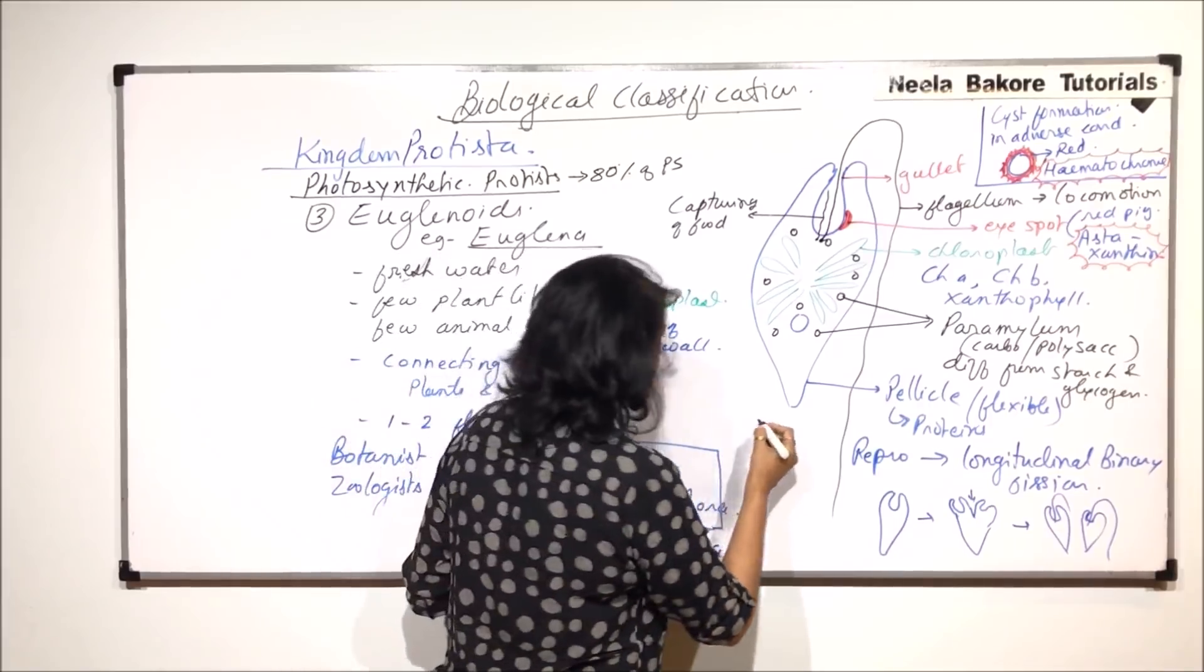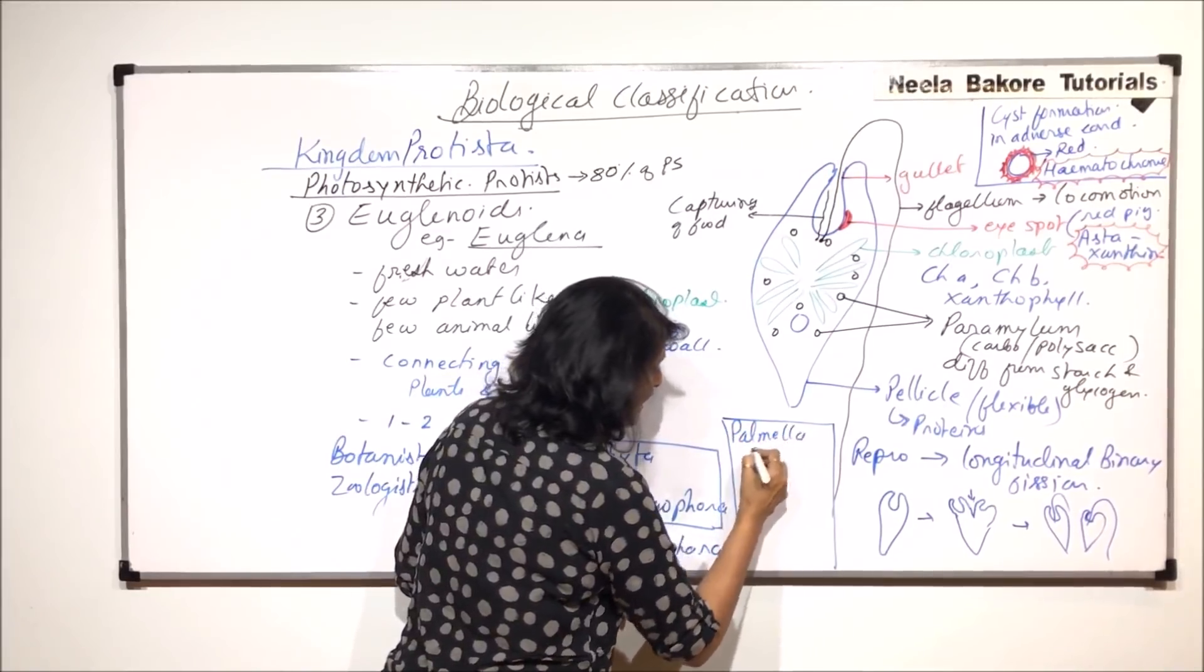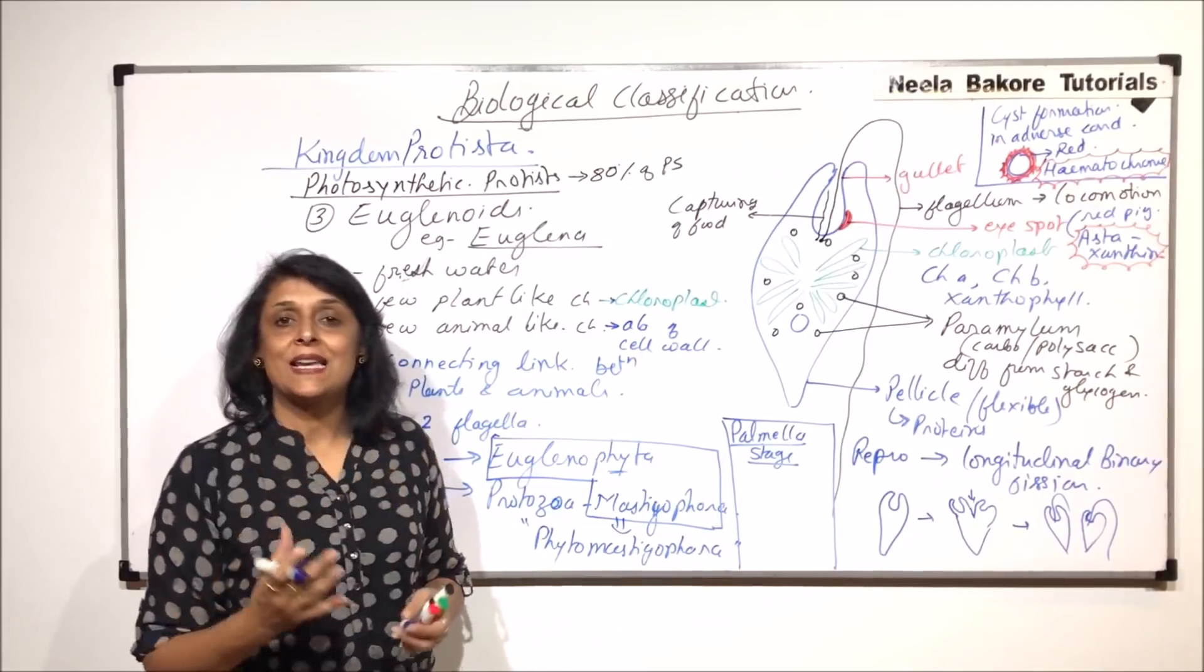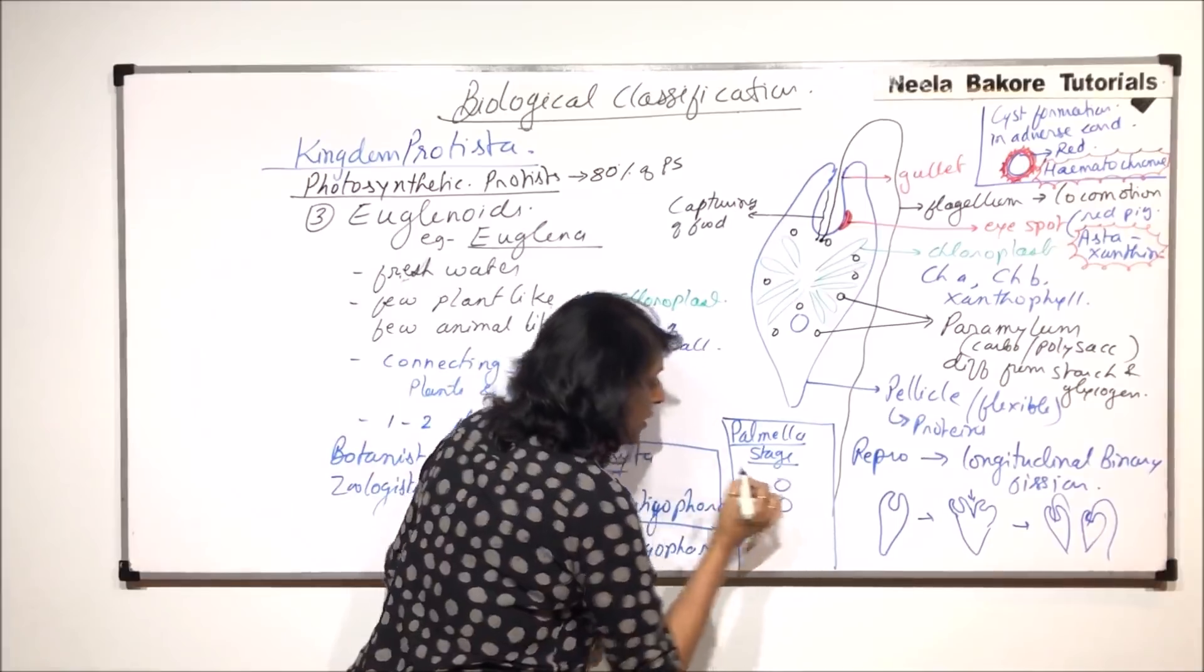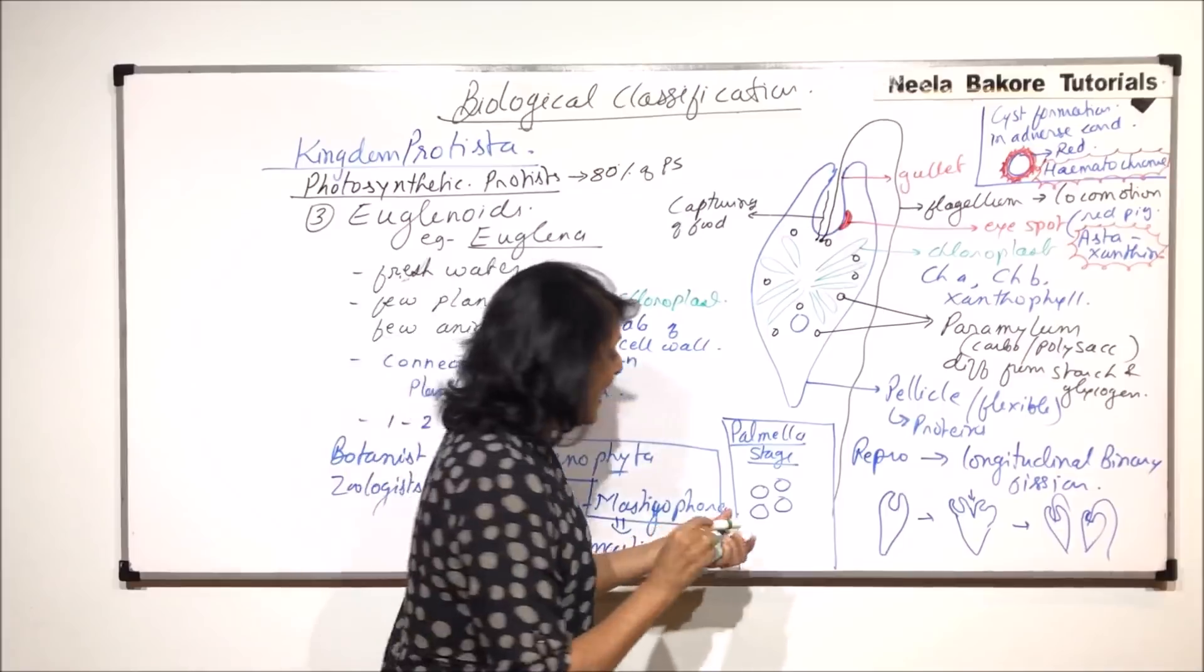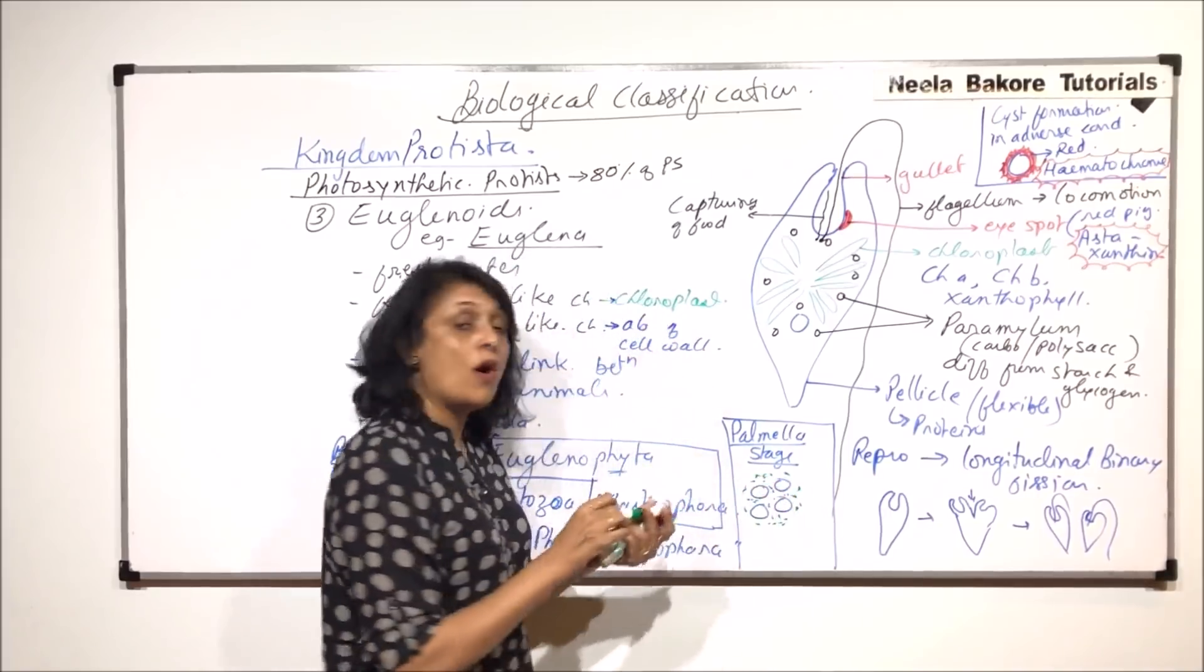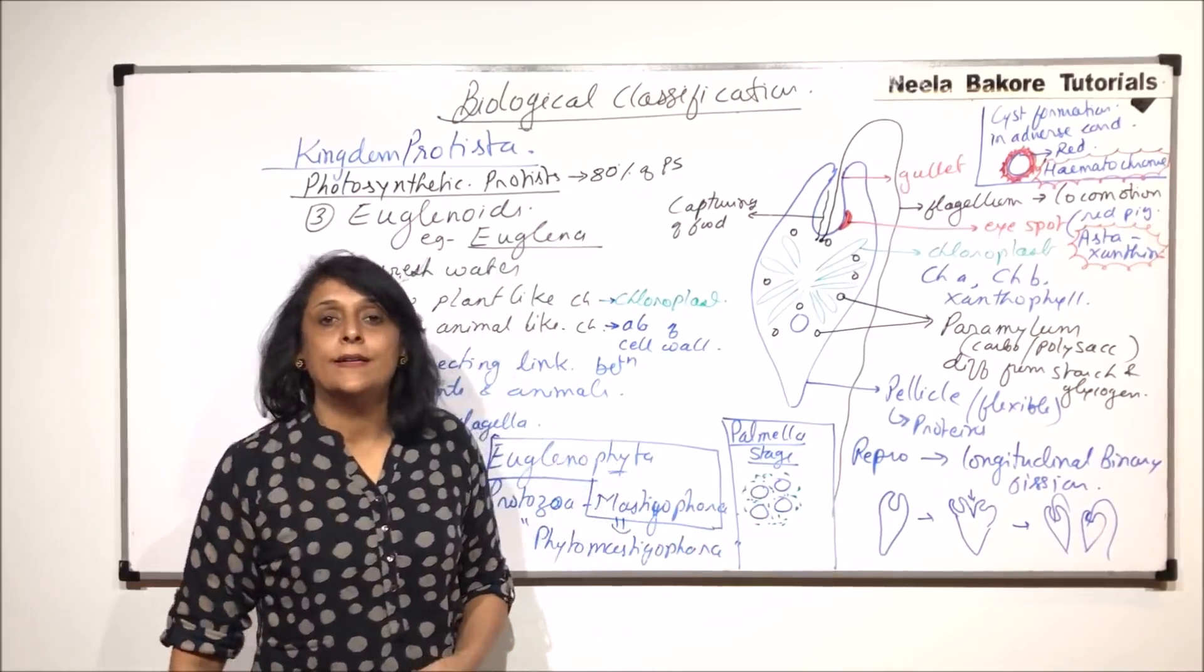Sometimes there is one more stage being reported, again during adverse condition. This stage is known as palmella stage. What happens in palmella stage is many euglenoids come closer and get surrounded by mucilage. They have lost their flagella, become circular, and get surrounded by a thick mucilage layer. Once the adverse condition is gone, they will again develop both flagella and start appearing like the elongated cell, a typical cell.